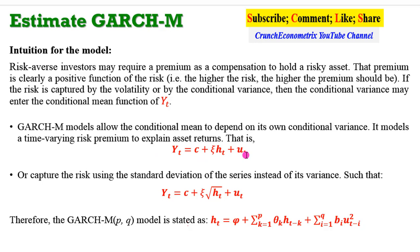So the GARCH-M allows the conditional mean to depend on its own conditional variance. It models a time-varying risk premium. The same GARCH-M model can also use the standard deviation of the series to capture the risk. So in the first one, we have the conditional variance, and in the second one, we have the standard deviation.